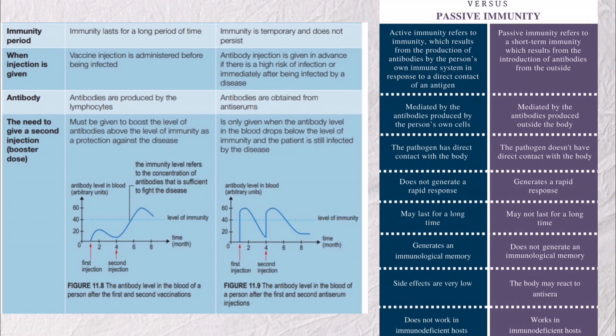The seventh aspect is antibody source — for active immunity, antibodies are produced by the lymphocytes; for passive immunity, antibodies are obtained from anti-serum. The eighth aspect is the need for a second injection, known as a booster dose. For active immunity, a booster must be given to raise antibody levels above the level of immunity. For passive immunity, it is only given when the antibody level drops below the level of immunity and the patient is still affected by the disease.